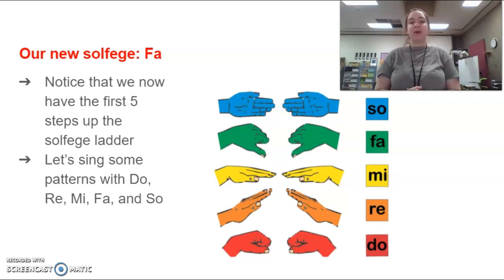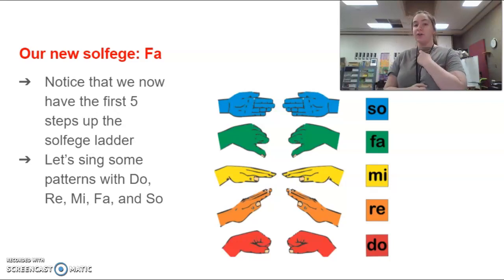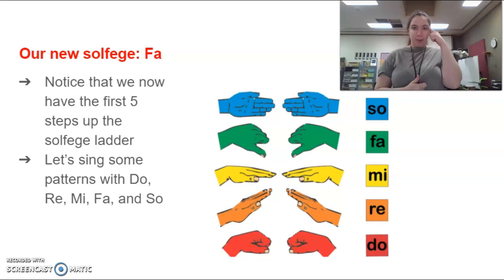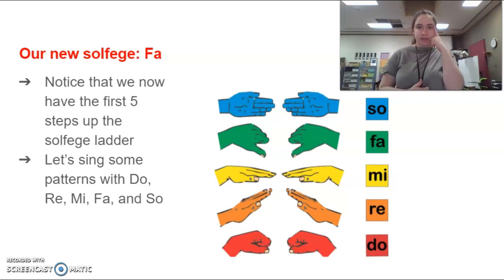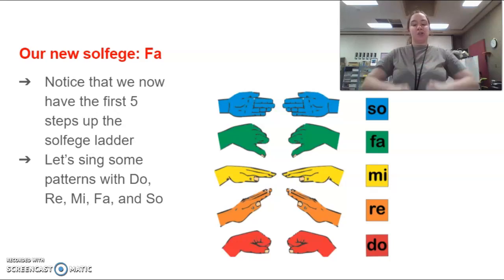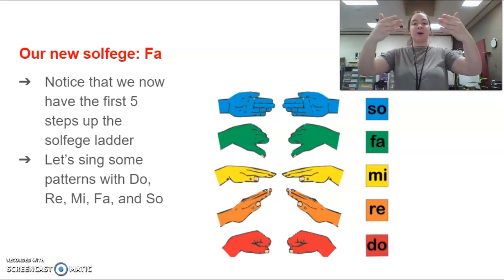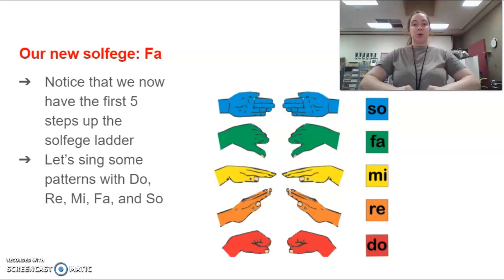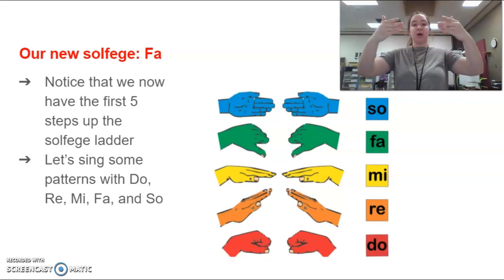Let's do some practice with some echo patterns. I will sing first and then you will repeat after me. Your job is to memorize the order that I am singing the notes in so that you can sing it back to me. Here I go: do, mi, so, so. Your turn. Do, mi, so, so.